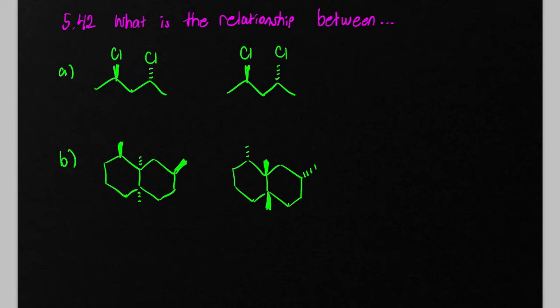This is problem 42 in Klein's second edition organic chemistry textbook, and it's a classic kind of question you'll see in organic chemistry. What is the relationship between the different molecules? We don't know if they're identical or maybe constitutional isomers.